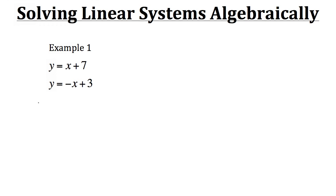The idea with using the substitution method is that we want to first isolate one of our variables — whether it be x or y, it doesn't matter. But after we've done that, we want to take the expression that is equivalent to that isolated variable and plug it in to that variable in the other equation. So let's try that with example one. If you notice, we already have a variable that's isolated — that's our y — so we know that y is equivalent to x plus 7. We can take that expression of x plus 7 and plug it in for y in our second equation.